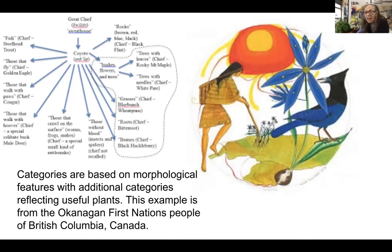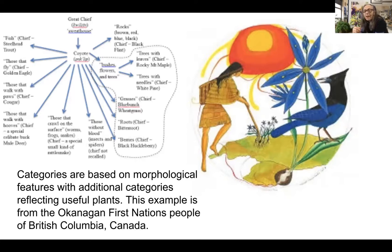Interestingly, Aristotle had that same category of 'those without blood' — and that was insects and spiders. Then there are the plants. Some of those categories are similar to ones we use today: trees with leaves and trees with needles, and the grasses. Interestingly, there are two categories that involve the usefulness of those items. Because these plants were so important to survival, they would get their own category — roots that you could eat, and those that were buried.